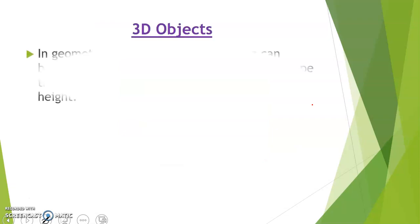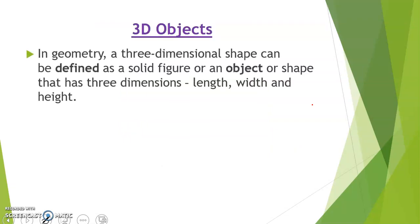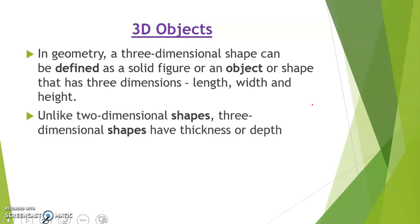3D objects. Now coming to the 3D objects. In geometry, a three-dimensional shape can be defined as a solid figure or an object or shape that has three dimensions: length, width, and height. Unlike two-dimensional shapes, three-dimensional shapes have thickness or depth.